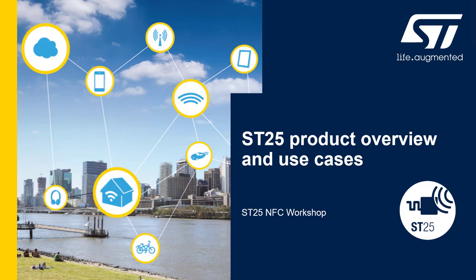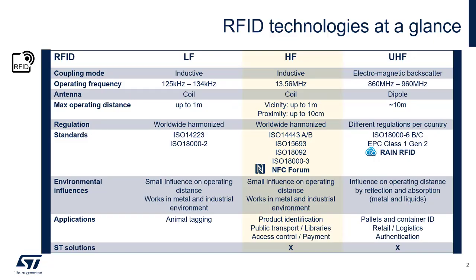Welcome to the ST NFC RFID Product Overview and Discussion of Detailed Use Cases. In RFID technologies as a whole, ST offers solutions in the center band labeled HF, where NFC operates at 13.56 MHz. ST offers solutions of both reader and tag ICs. In the far right band labeled UHF, which operates at 860 MHz to 960 MHz, ST offers reader ICs and has partners for tags.